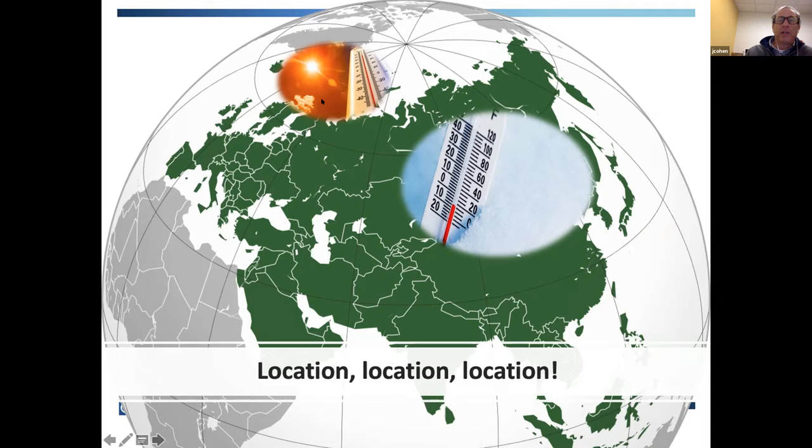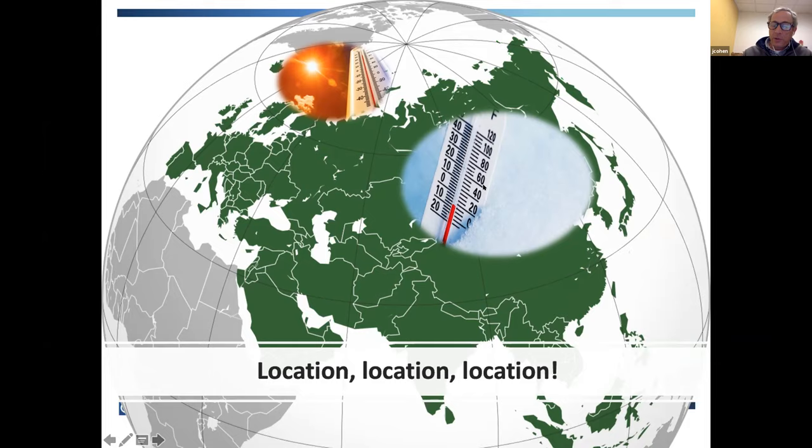There's been an increase in Siberian snow cover, but that's leading to colder temperatures across Siberia. So across Northwest Eurasia you have warming and heating from the disappearing sea ice, and in Northeast Asia — primarily Siberia — you have this cooling due to increasing snow cover.